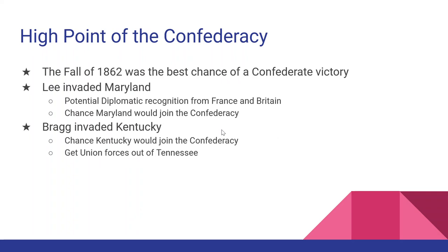The fall of 1862 was the Confederacy's best chance to win. It was the only time the Confederacy was powerful enough to launch two separate and independent invasions of the North. Ultimately, neither invasion works — both have to retreat — but that is generally speaking the high point of the Confederacy.